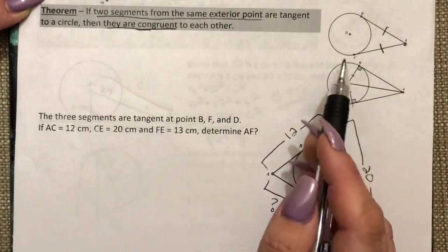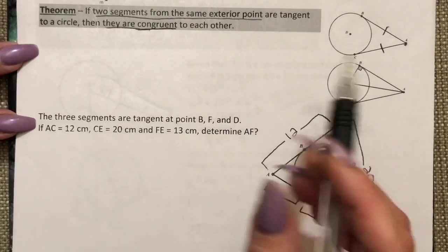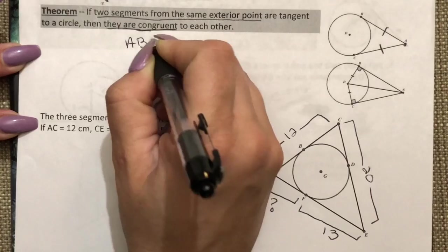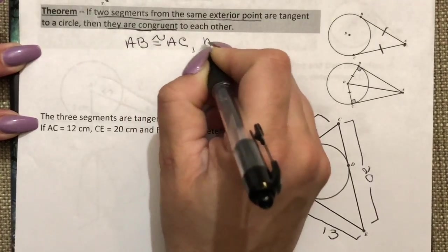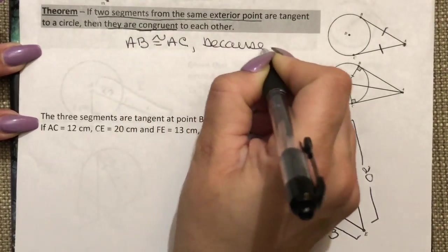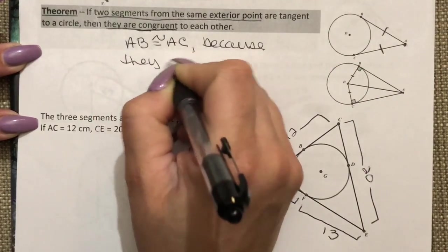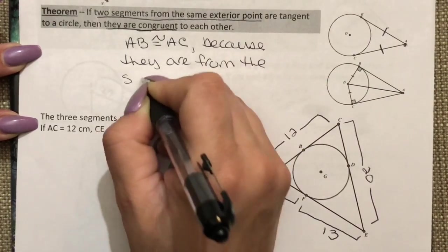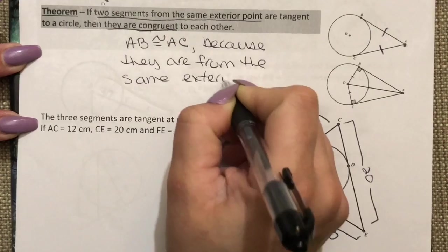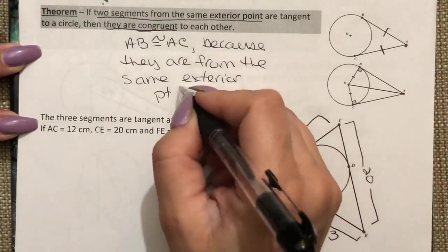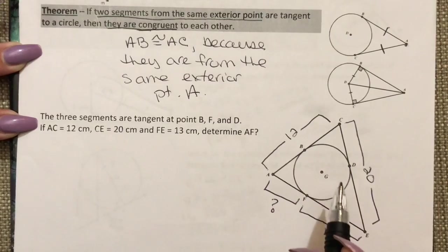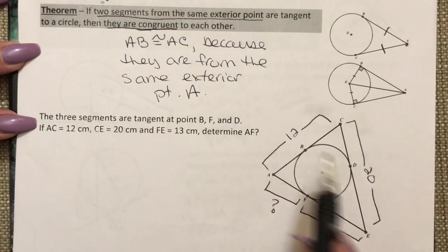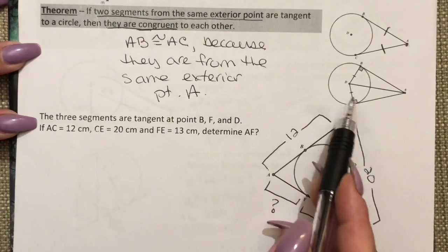I can make a statement that would be something like AB is congruent to AC because they are from the same exterior point, and in this case the exterior point was A.